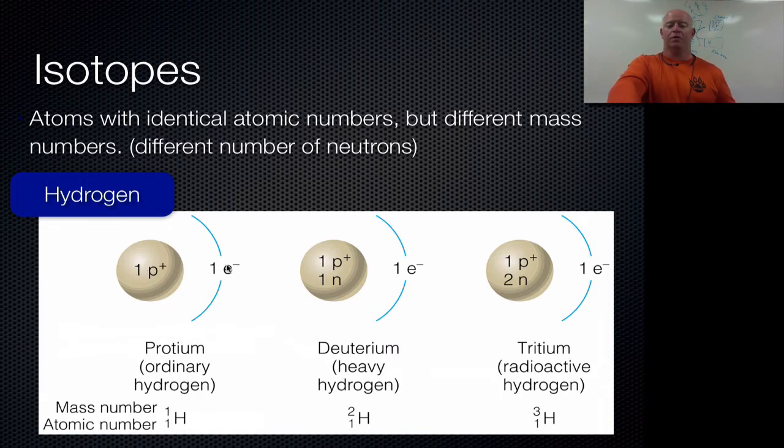For example, hydrogen. Our most common form has one proton in it and one electron, that's it. However, if you add a neutron in there we get what we call heavy hydrogen or deuterium. That gives you one proton, one neutron.